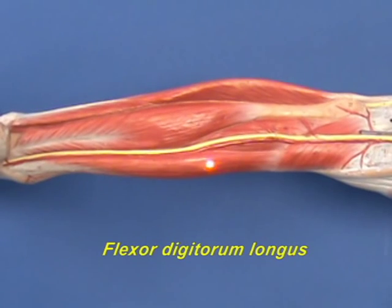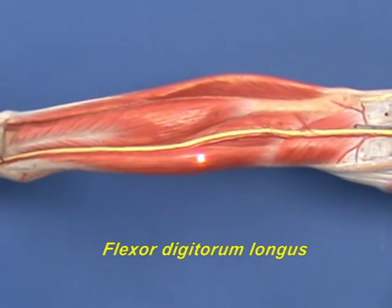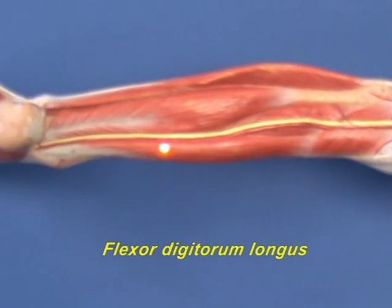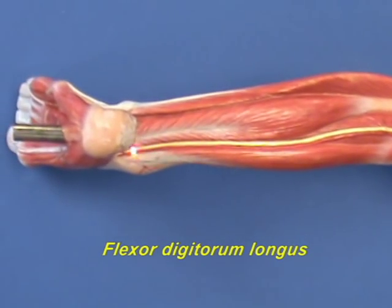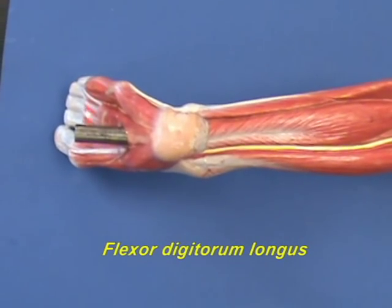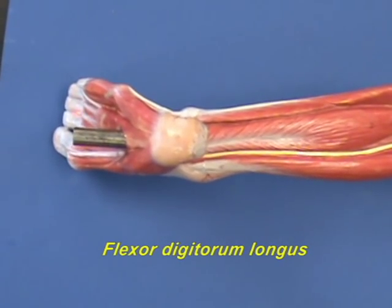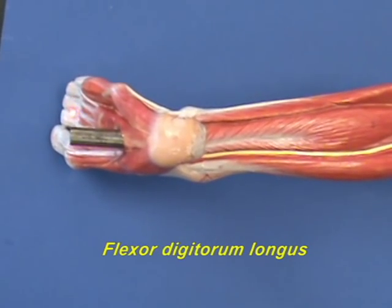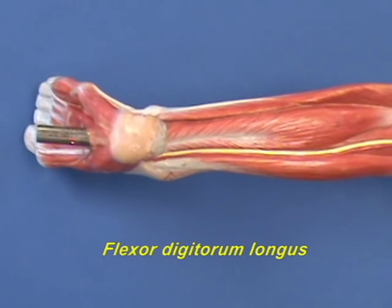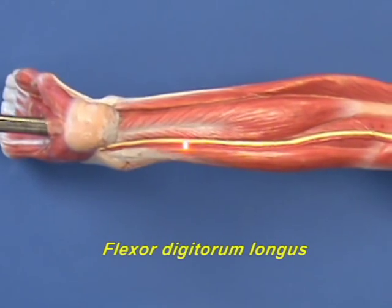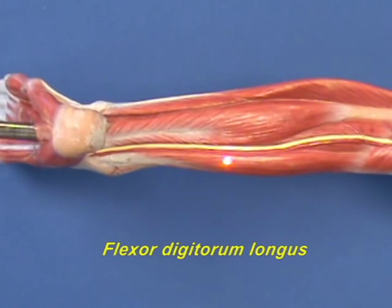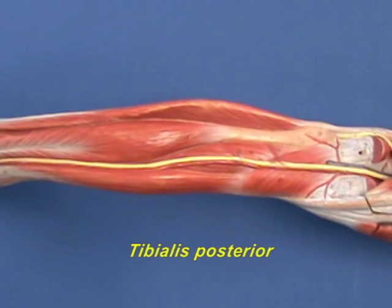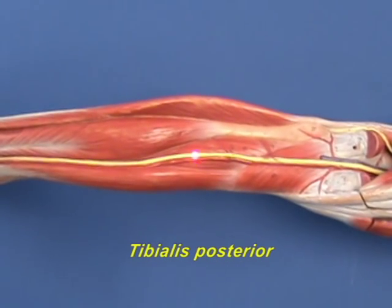The flexor digitorum longus is on the medial side of the deep compartment of the leg. It has an origin on the posterior side of the tibia and inserts by way of four tendons. As its name implies, the flexor digitorum longus flexes the four lateral toes.